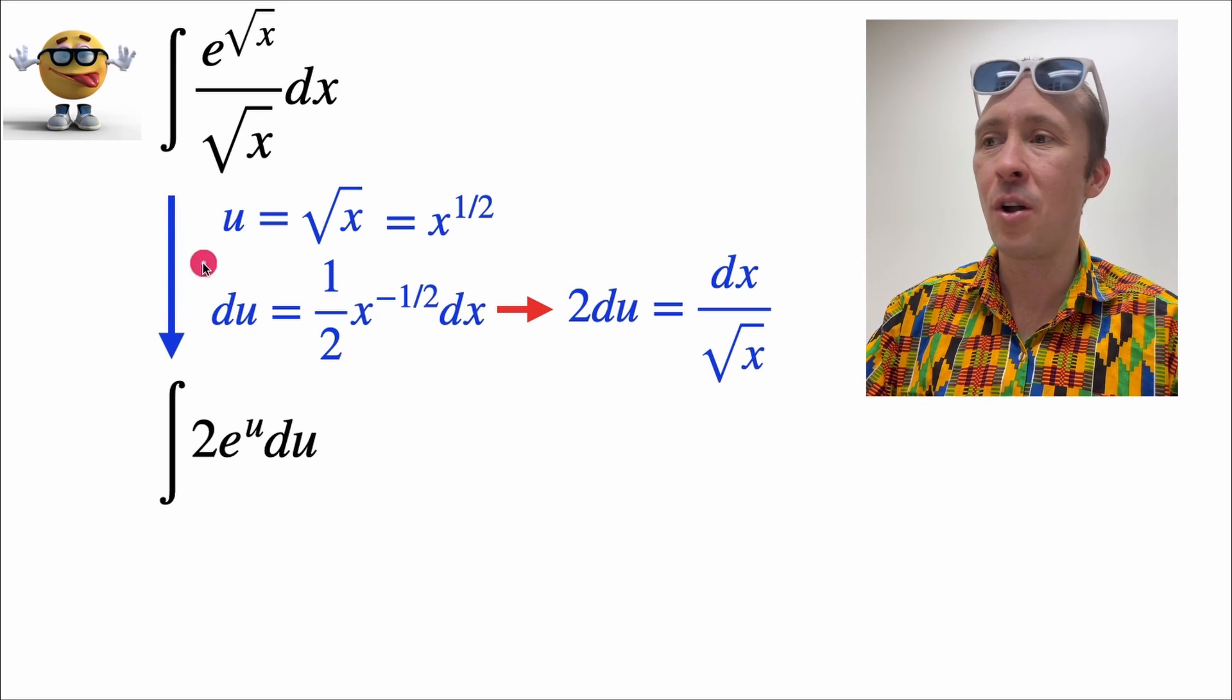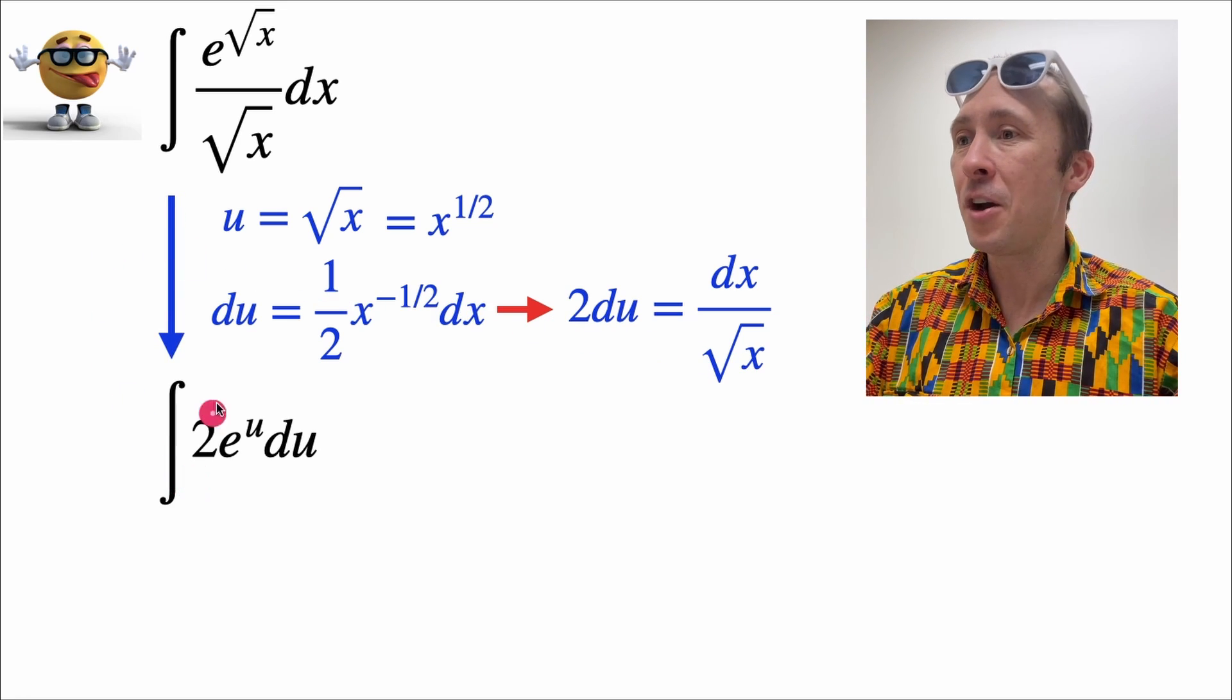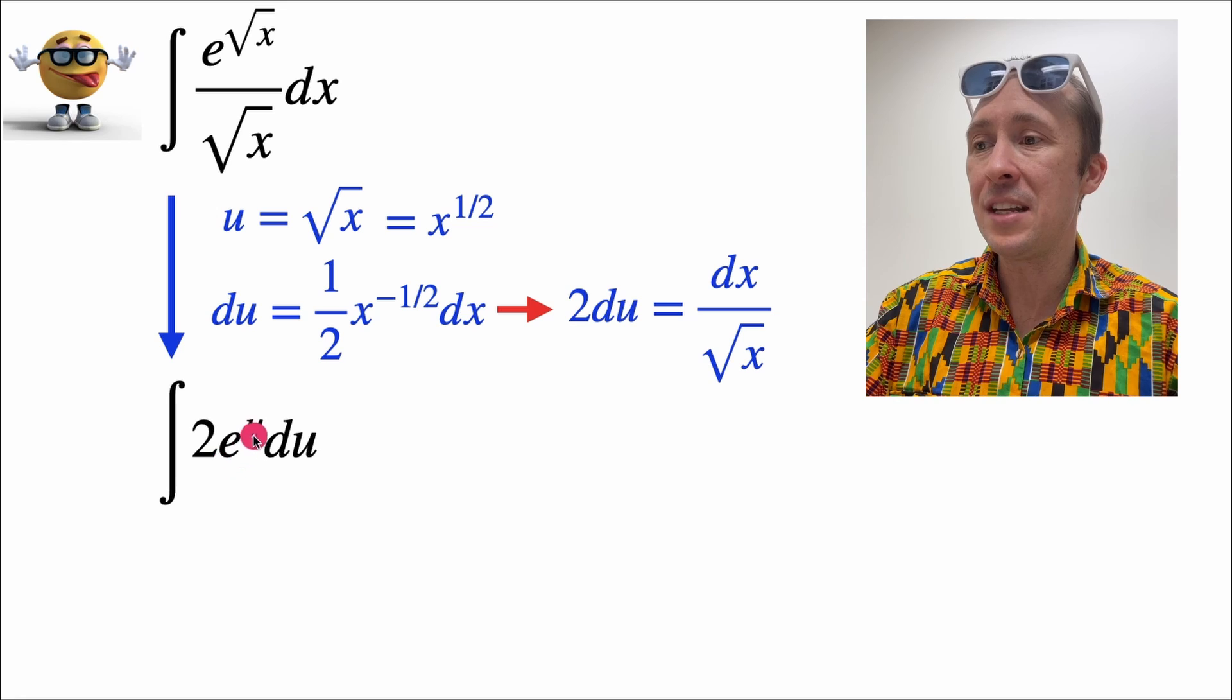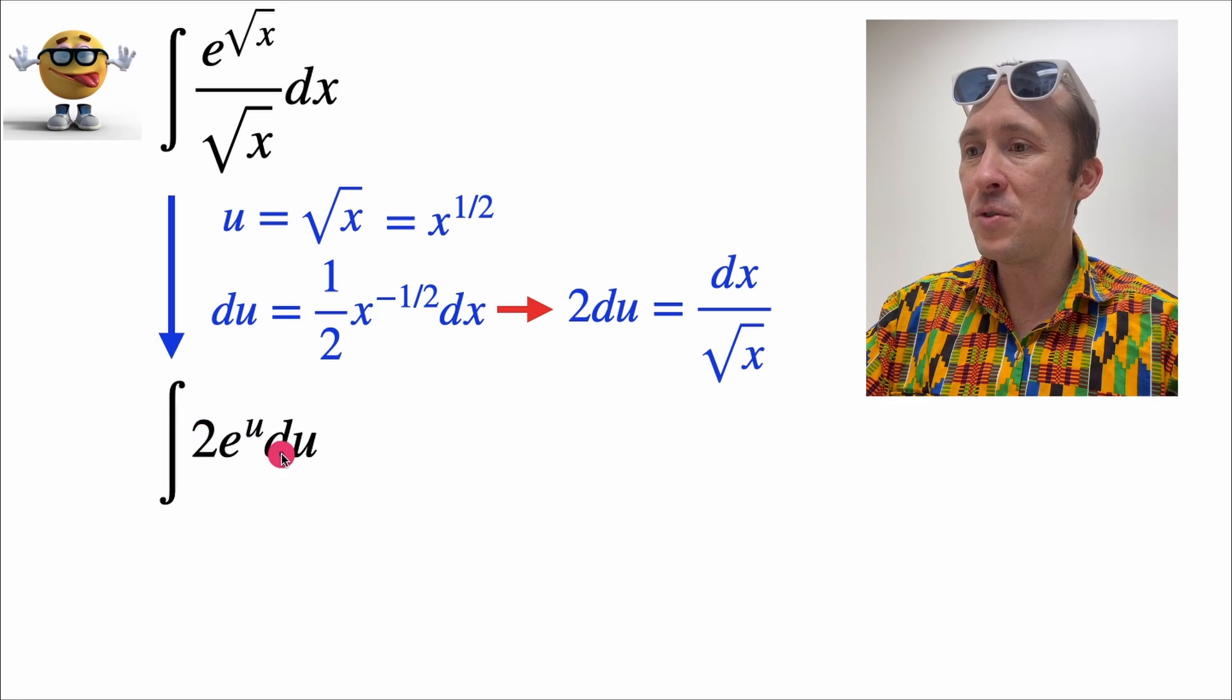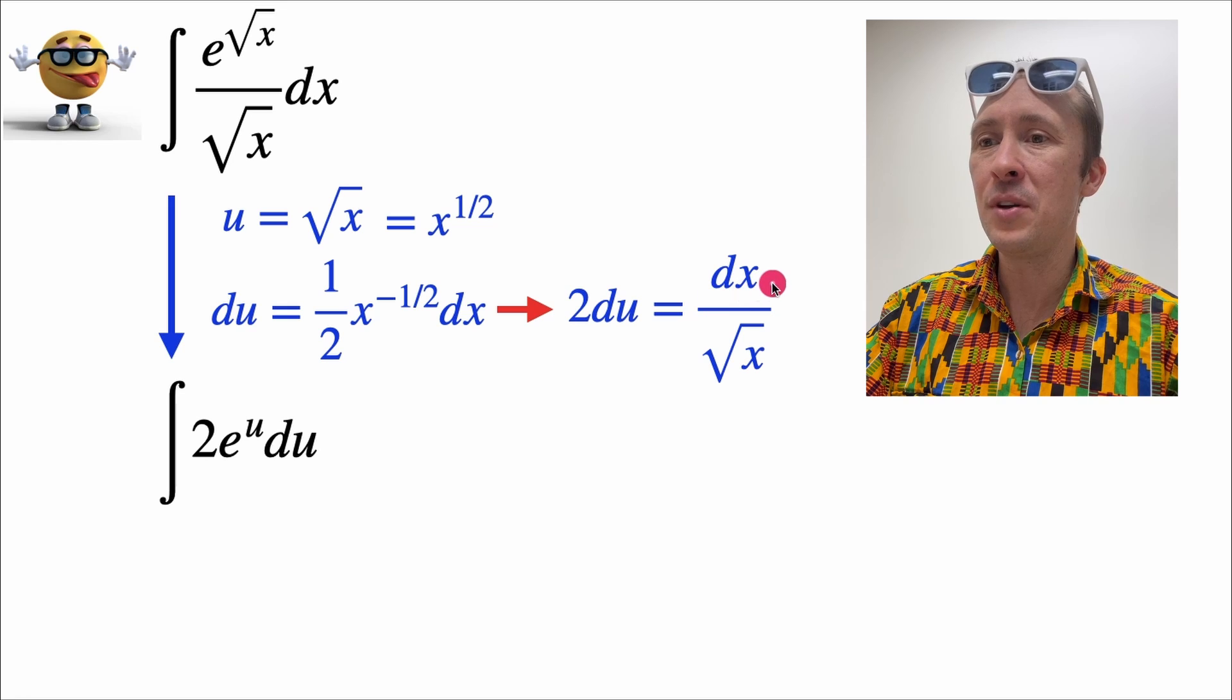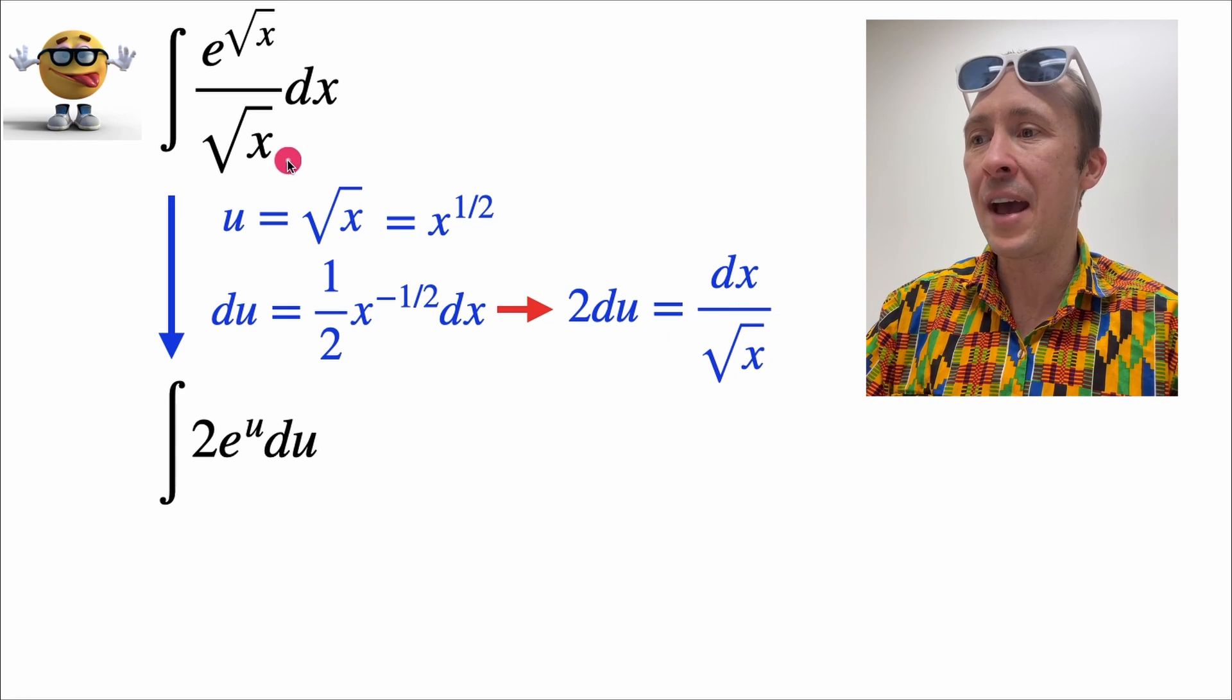And if we substitute all of this in, this is what we get. So e to the power of square root of x is now e to the power of u, because u is the square root of x. And this 2du is here, because 2du equals dx divided by the square root of x.